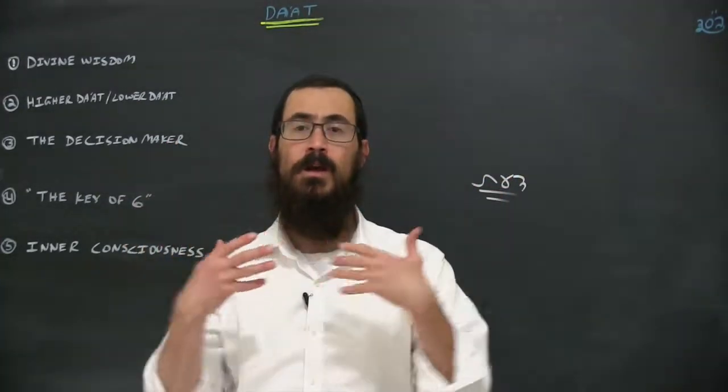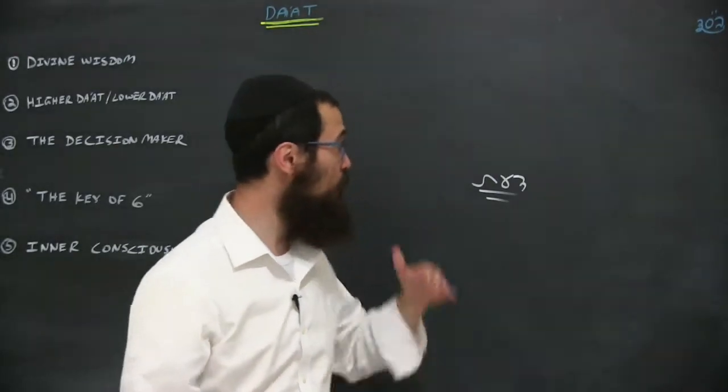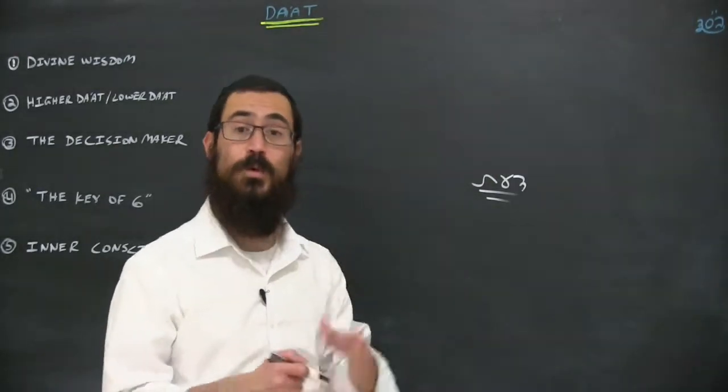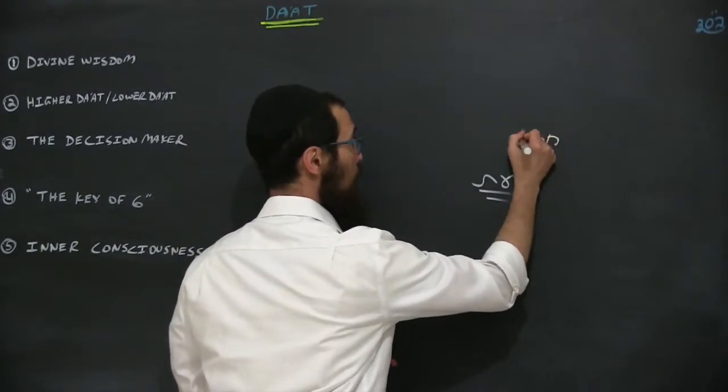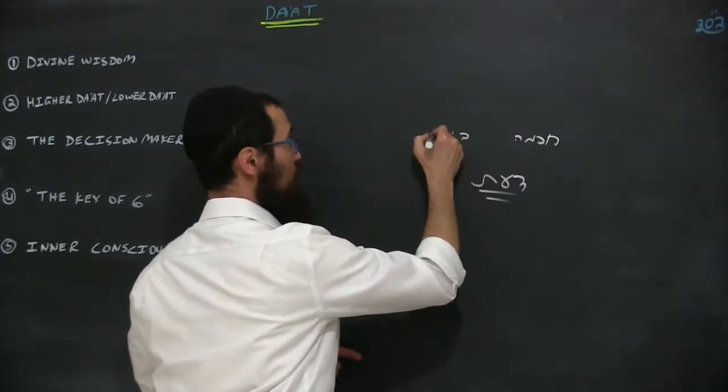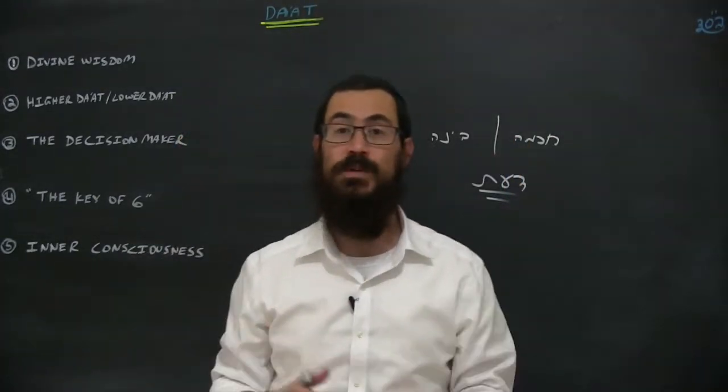On an intellectual level, dat has to do with merging opposites. What are we merging here? We are merging the first two spheres which we spoke about: the sphere of Chokhmah and the sphere of Binah, which are vastly different as we studied in previous classes.